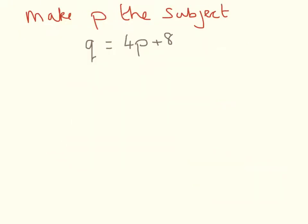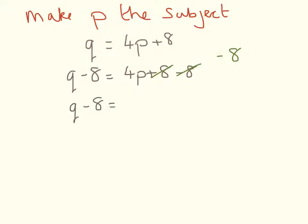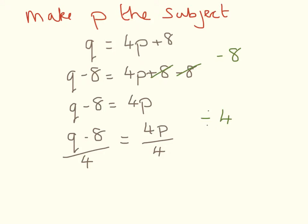Here we need to make p the subject of the formula. We have 8 on the right hand side that we don't want, so we minus 8: q minus 8 equals 4p plus 8 minus 8. The plus 8 and the minus 8 cancel each other out, so we have q minus 8 equals 4p. Then we divide by 4: q minus 8 divided by 4 equals 4p divided by 4. Because we have 4 on the top and the bottom they cancel, so our answer is q minus 8 over 4 equals p.